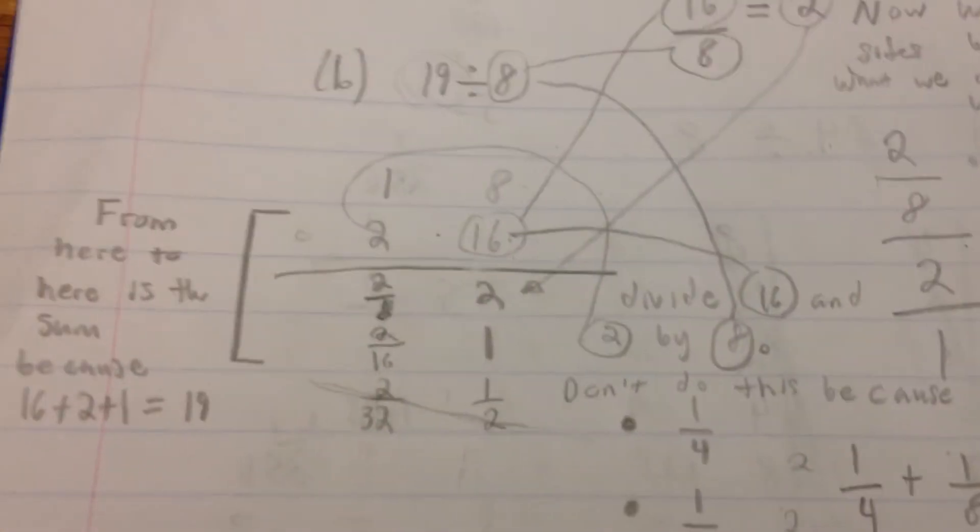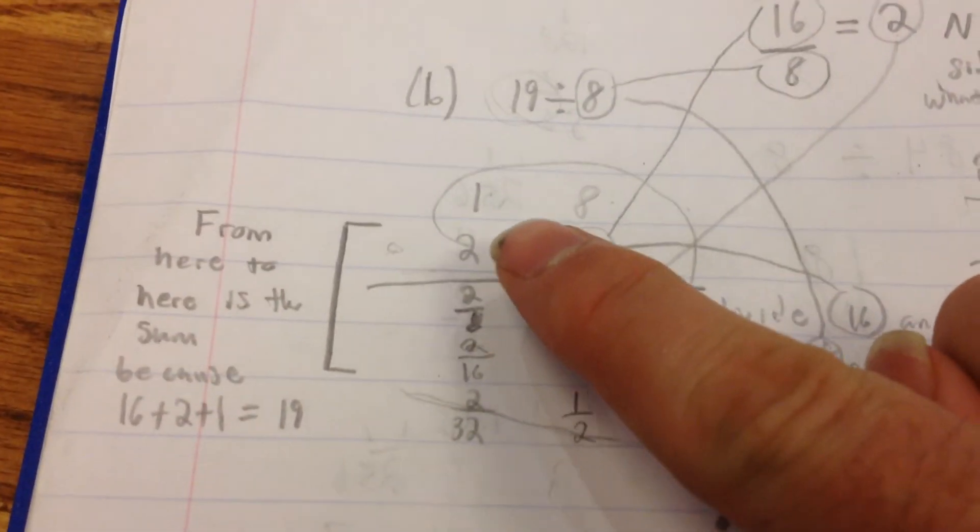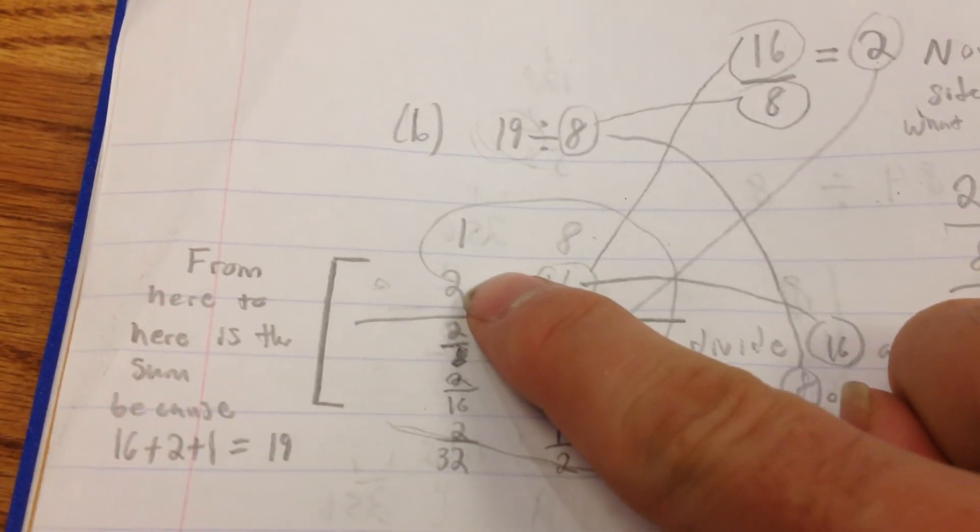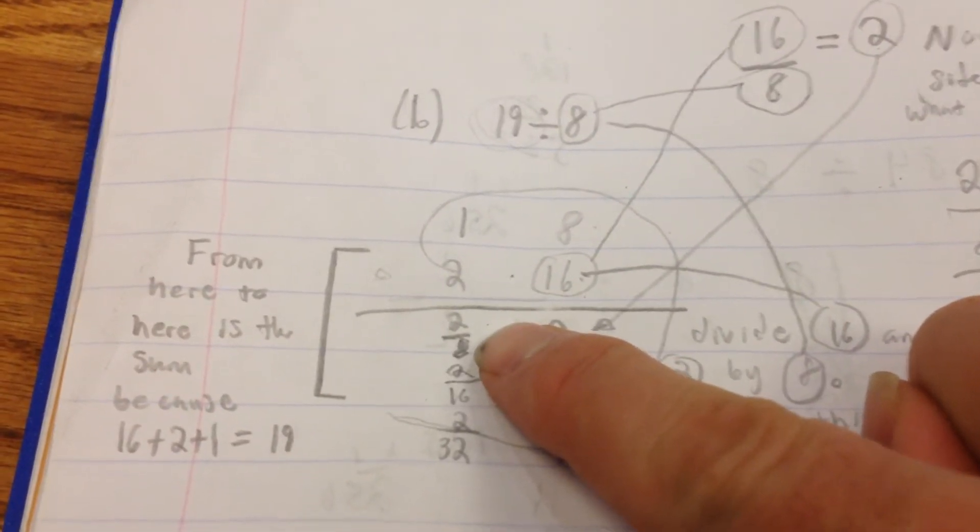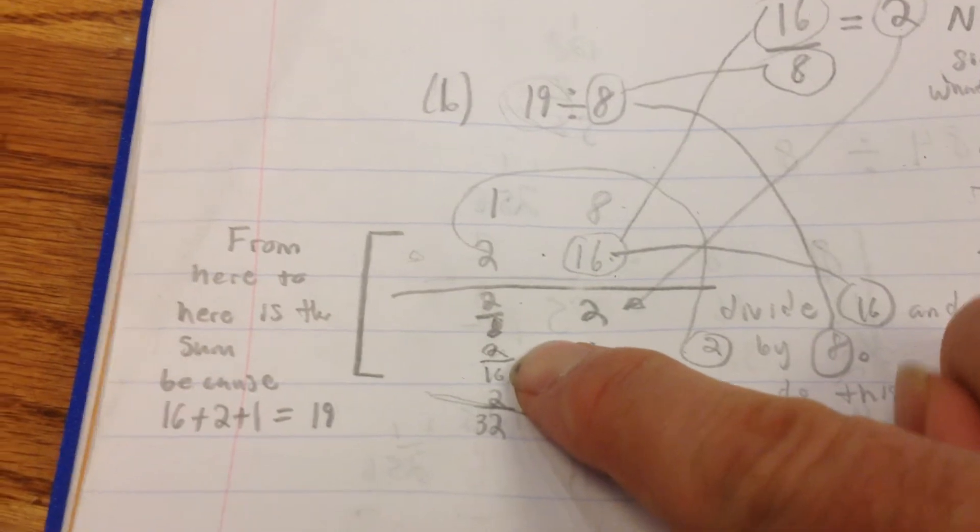You want to add up to 19. So when you get all of these added up now, you add up 2 plus 2 eighths plus 2 sixteenths.